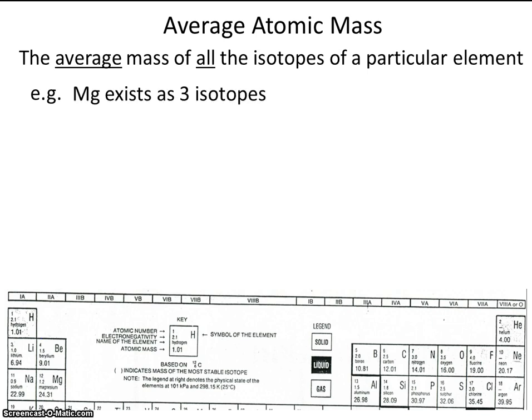So for example, magnesium exists as three isotopes: magnesium-24, magnesium-25, and magnesium-26.